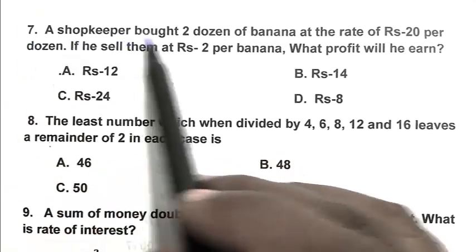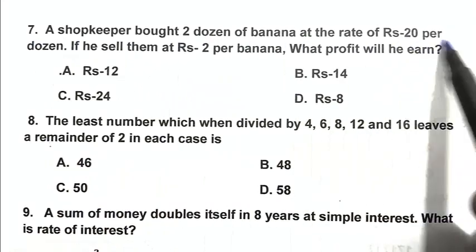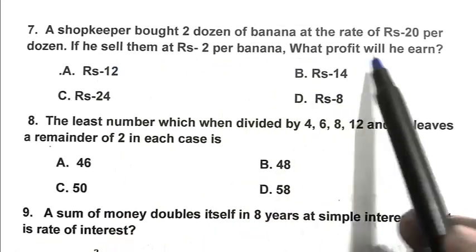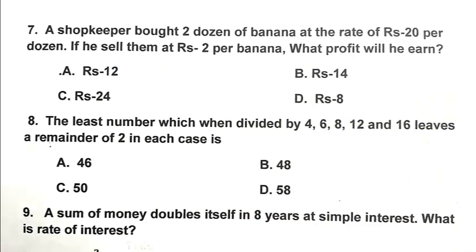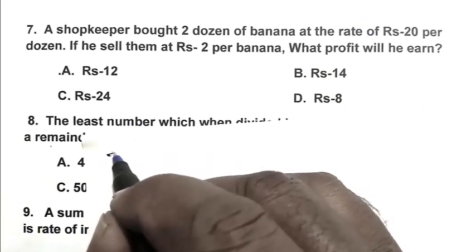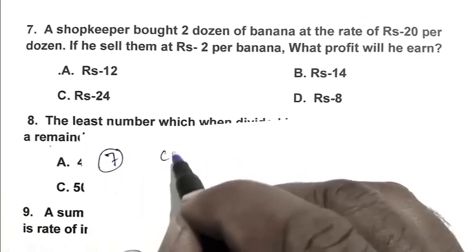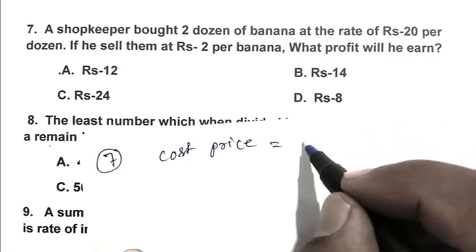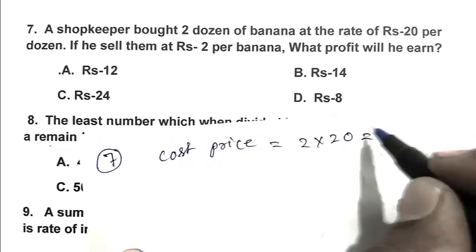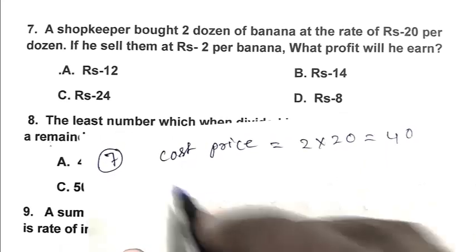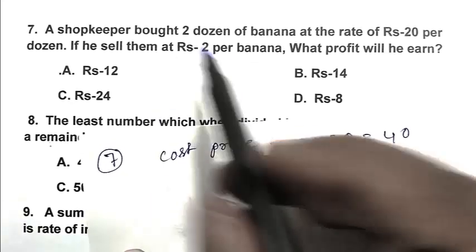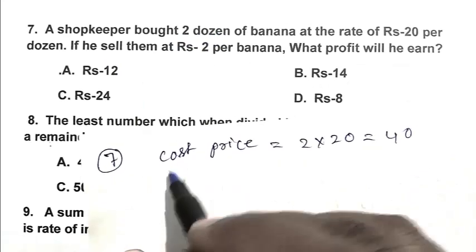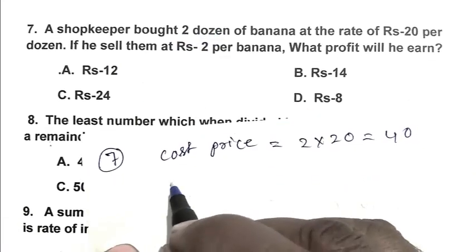Question number 7. A software bought 2 dozen bananas at the rate of Rs 20 per dozen. If he sells them at Rs 2 per banana, what profit will he earn? So friend, cost price is 2 multiplied by 20, that is Rs 40. Here, the software bought 2 dozen bananas, that is 24 bananas.